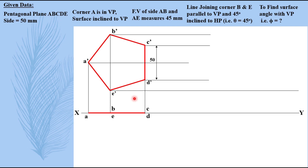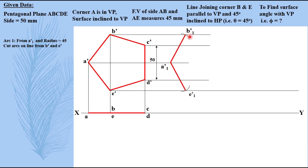We do not have the surface angle for the next step, but what is given is that the front view of sides AB and AE measures 45mm. These sides are 50mm in the true shape, but in the next reduced shape they will appear only as 45mm. Take a point and name it A1'. Taking compass radius equal to 45mm, keeping the compass at A1' and cutting on the B' line gives B1', and cutting on the E' line gives E1'. Join them. Do not complete the remaining pentagon here, because nothing is mentioned about how much sides BC and DE are reduced — they will reduce but by what amount we do not know. Take the projectors down.